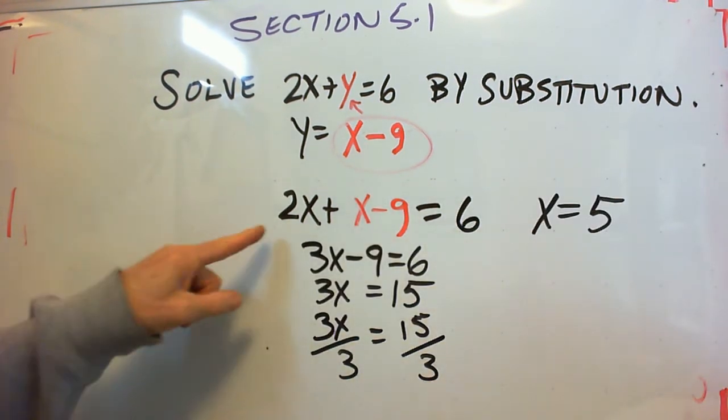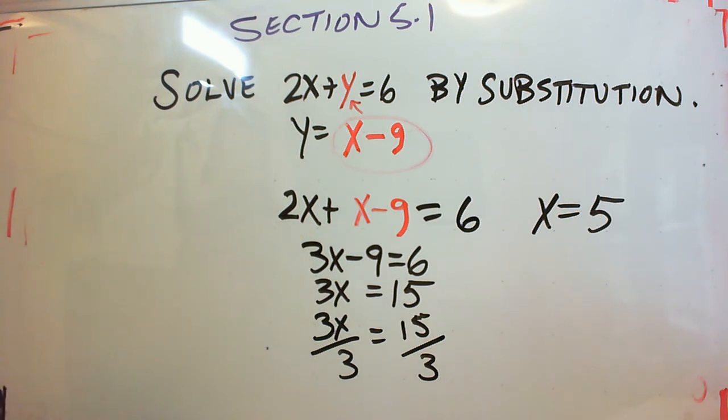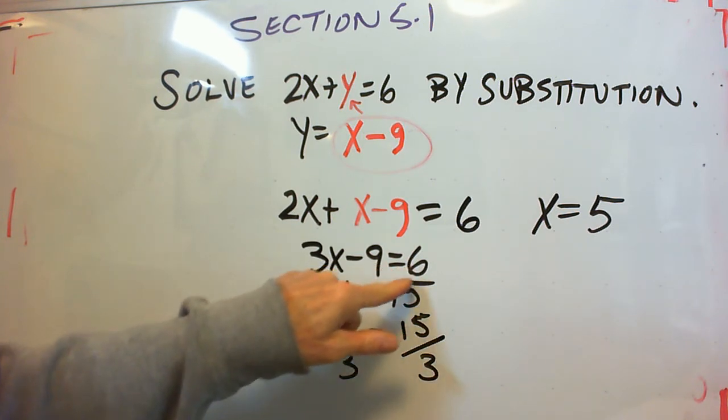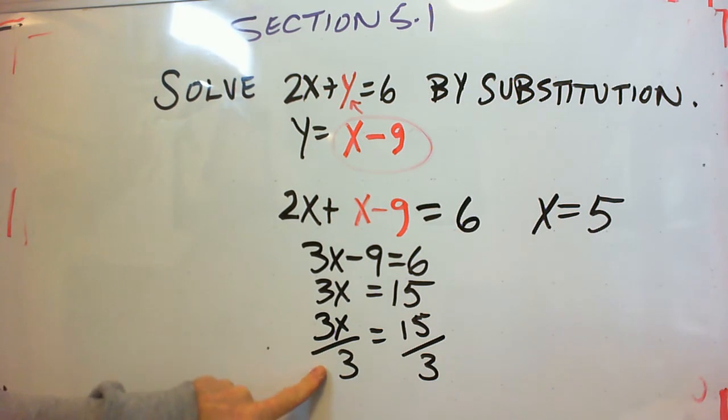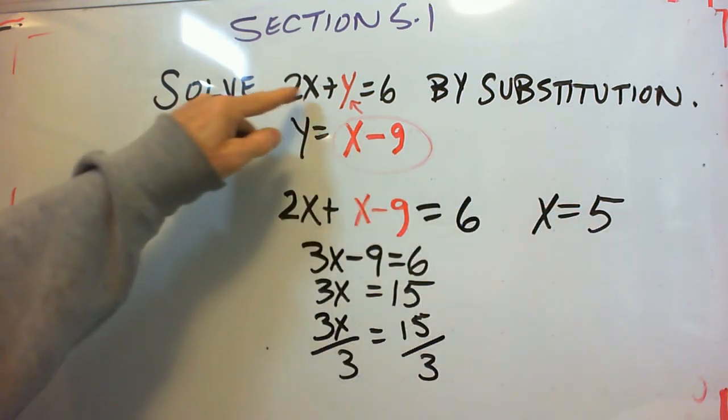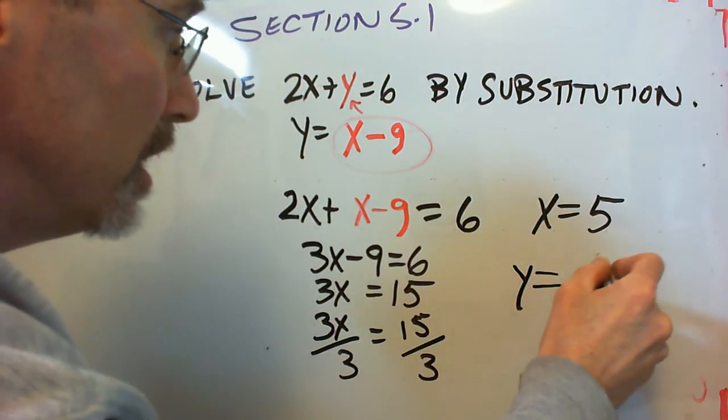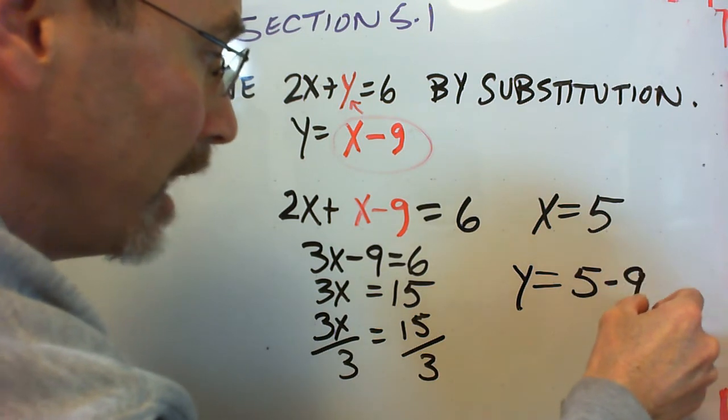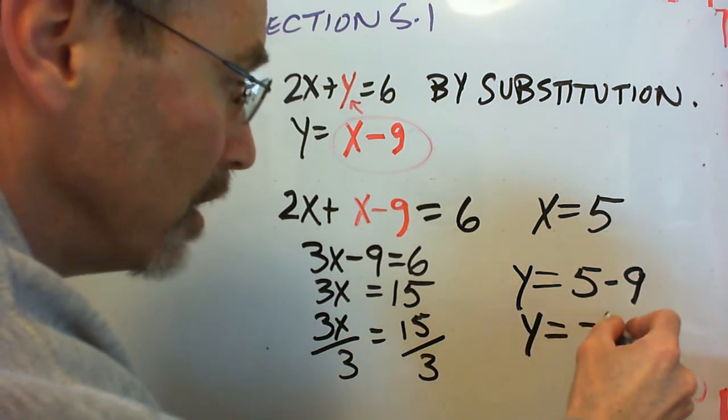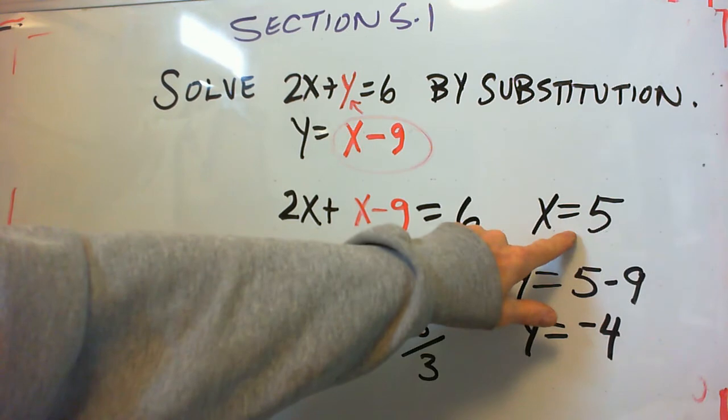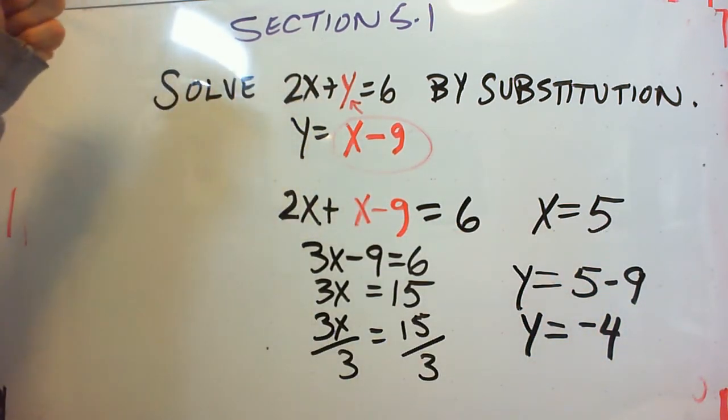So we've solved this equation like you've solved many equations before. Add like terms. Get all the x's alone on one side. So we get 3x minus 9 equals 6. 3x equals 9 plus 6 is 15. Divide both sides by 3. We get x equals 5. Now we can plug that result into either equation. I would pick the second equation. Y equals x minus 9. So that means y equals 5 minus 9. Y equals negative 4.